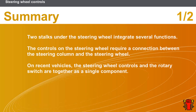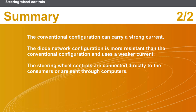In this section, we covered the following points: two stalks under the steering wheel integrate several functions. The controls on the steering wheel require a connection between the steering column and the steering wheel. On recent vehicles, the steering wheel controls and the rotary switch are together as a single component. The conventional configuration can carry a strong current, while the diode network configuration is more resistant and uses a weaker current. The steering wheel controls are connected directly to the consumers or are sent through computers.